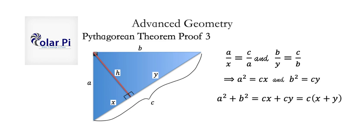This is what would happen. A squared plus b squared would first equal cx plus cy, and then if we factor out a c, we get c times x plus y.